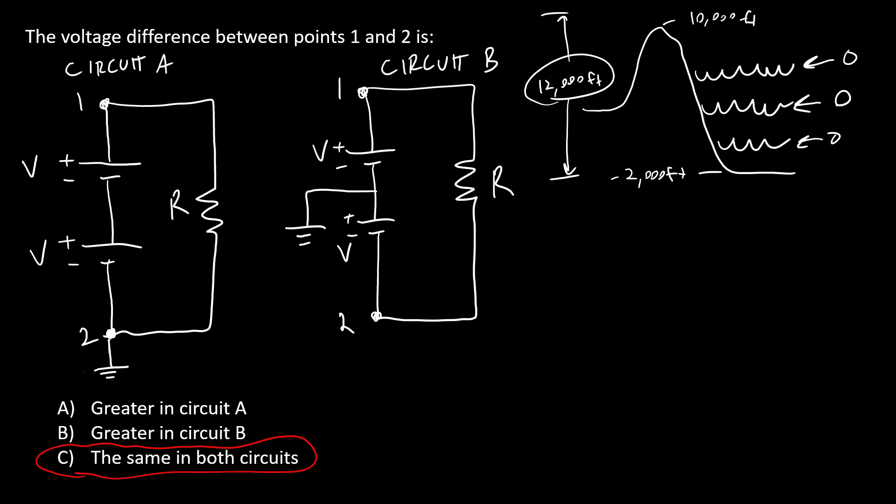The difference between these two points is always going to be 2V because I have those two batteries in series and I'm measuring the voltage across them. It doesn't matter where I define zero.